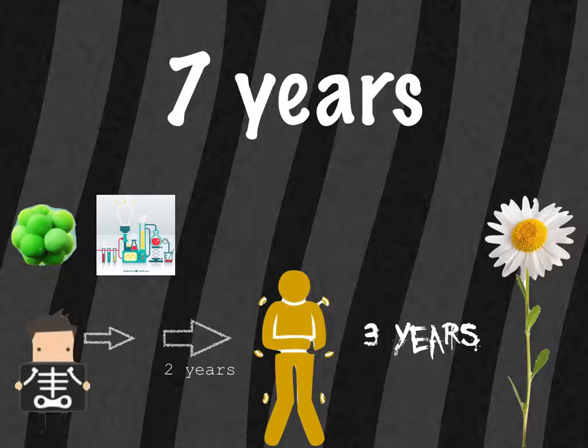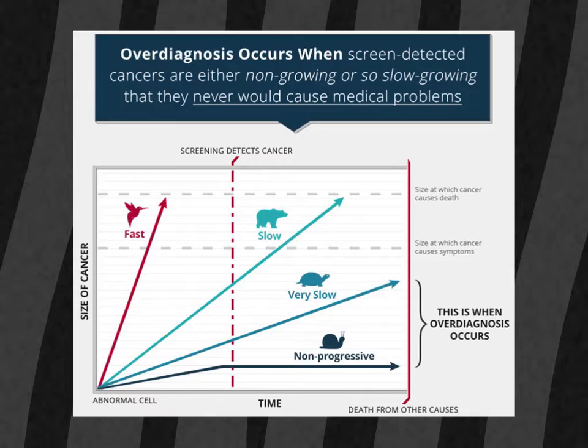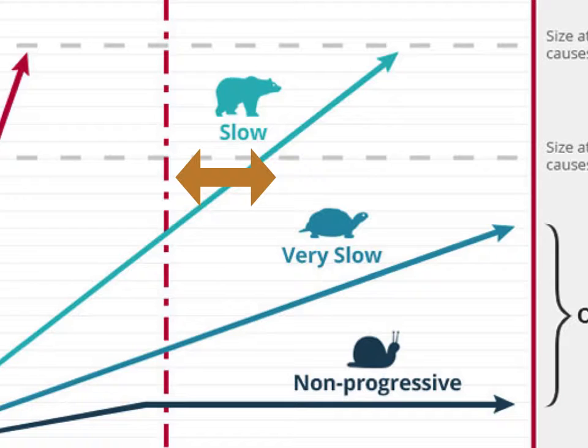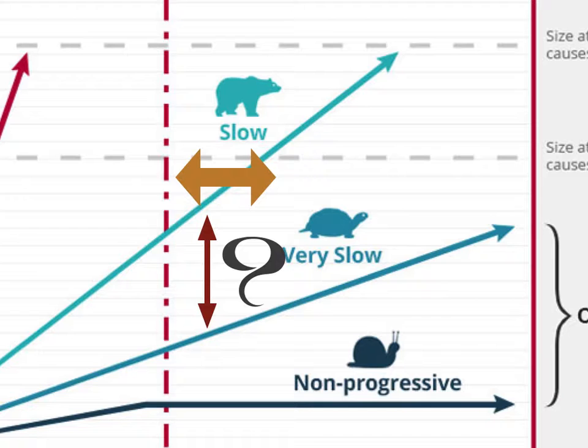From our graphic earlier, this is the area where you find lead time bias. The real problem here is we don't know who has slowly progressive disease and who has very slowly progressive or non-progressive disease at the time of diagnosis. Because we don't want to miss anything, we tend to treat them all as fast diagnoses and often favor aggressive treatment even at the expense of the patient's health, even when there are risks involved with treatment, rather than opting for the possibility of potentially missing something.